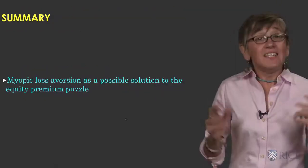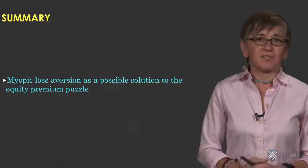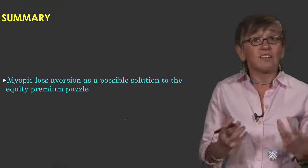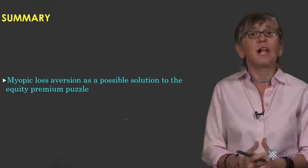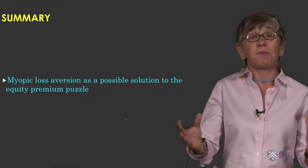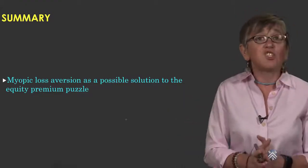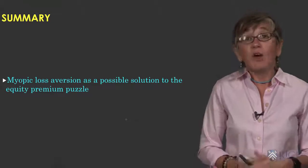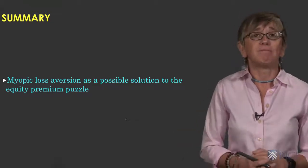In this lecture, you learned about the equity premium puzzle — the idea that high rates of return on stocks is difficult to reconcile with low risk aversion within the standard expected utility paradigm. Myopic loss aversion offers one possible explanation for why we observe such a high equity premium.